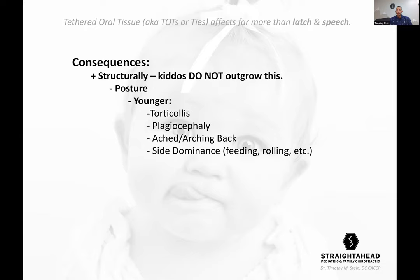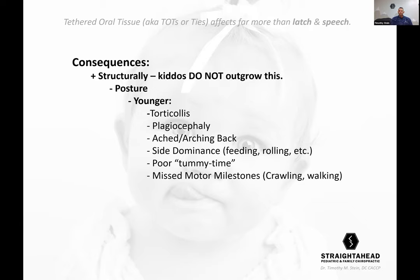Side dominance — throw torticollis, plagiocephaly, and arched back into the equation of a baby with TOTs, and they're going to have a side dominance. Moms come in all day long saying, 'My baby feeds really well on the left side but not the right.' Could it be simple chiropractic care reducing tension to get them bilaterally equal? Absolutely — we see that all the time. But could it also be tethered oral tissue? Yes, and often it's both.